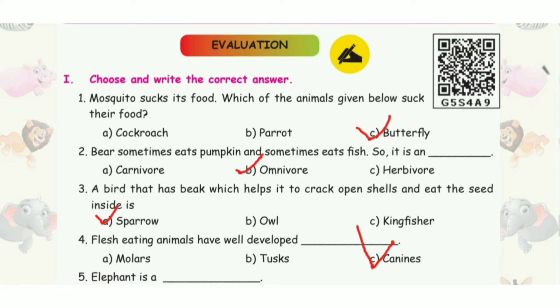Fourth question: flesh-eating animals have well-developed? The answer is option C, fangs.